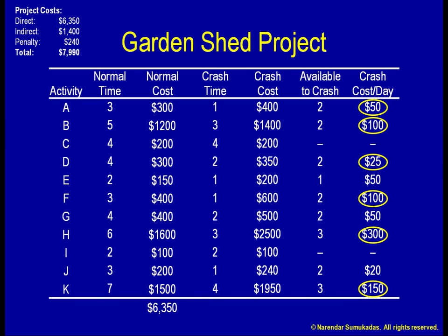The cheapest of these to crash is D, so I pick that. Most of the activities on the critical path cost more than the $80 per day that I stand to gain by expediting the project, so only activities A and D are worth crashing in order to save on the project costs. However, the reason I might still want to crash the other activities is to finish within the 24 days required for my backyard party. Activity D can be crashed by 2 days, but let me go step by step, since every time I change an activity duration the critical path can change. So I crash D by just one day.